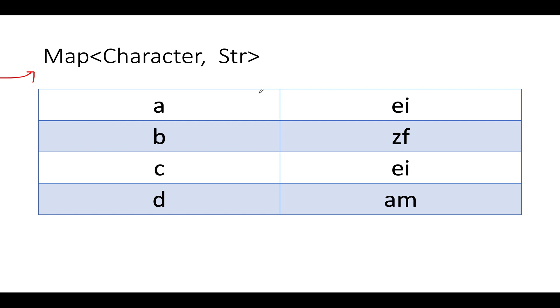Now I want to encrypt a particular string. Let's hypothetically assume we are interested in encrypting ABCD string. I'll be simply iterating through the string character by character. The first character I see is A, so A maps to EI, as a result of which my encrypted string will have EI in it. Next we see B, B maps to ZF, so I'll append ZF to EI.